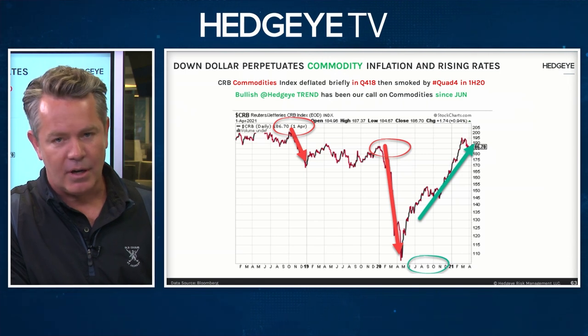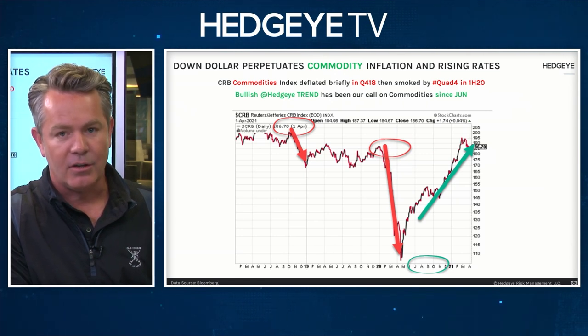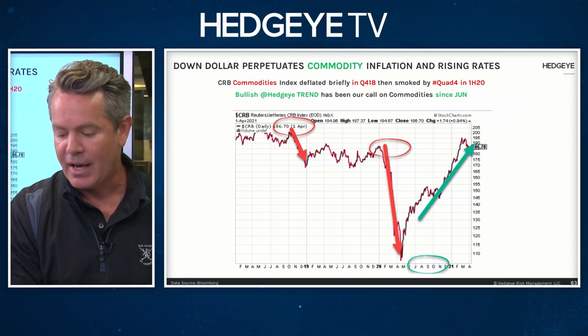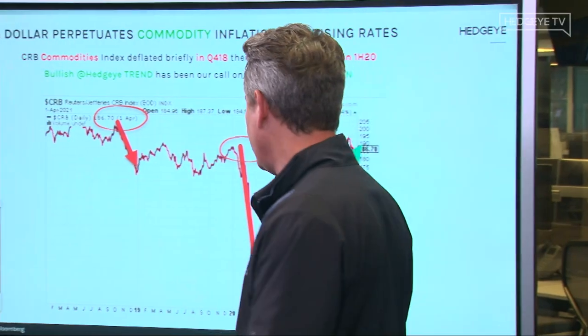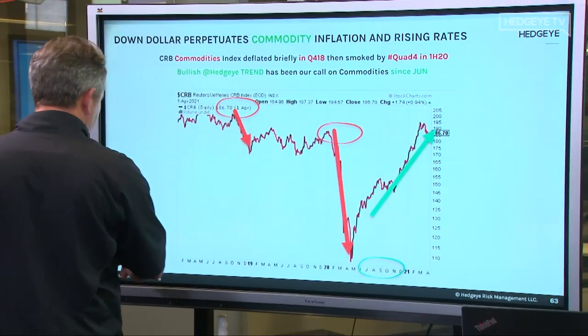You get the dollar right from here and you're going to get a lot of things right again. You're front-running commodities. The way that it works in that order, it's called a leading indicator.